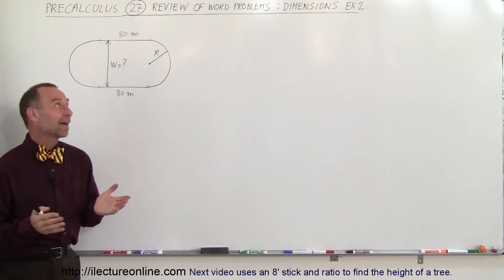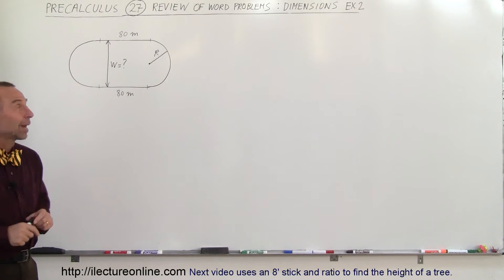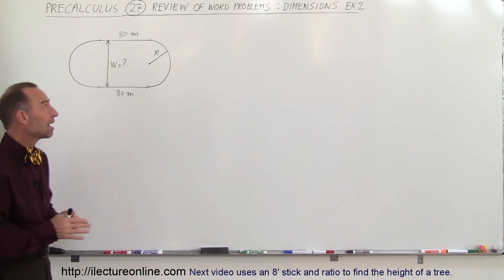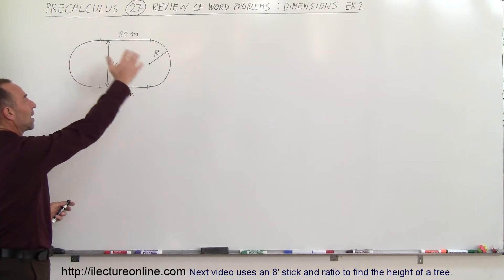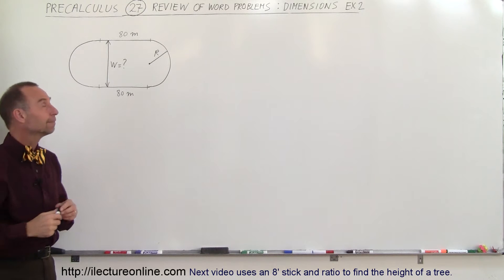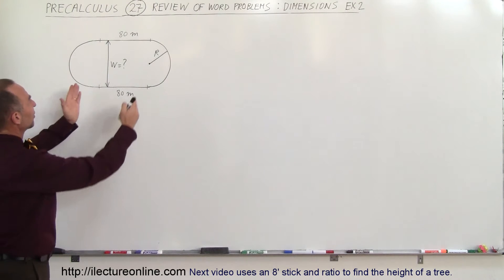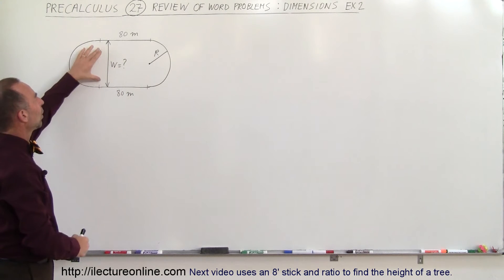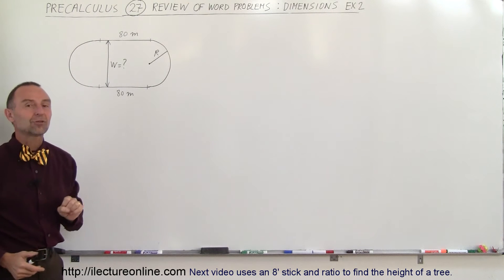Welcome to Lecture Online and our next example is another dimension type problem. Here we have a track. A track is typically 400 meters around, and let's say we have straightaways that are 80 meters. What is the width of that track?